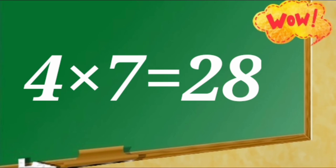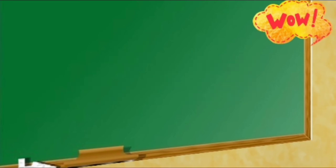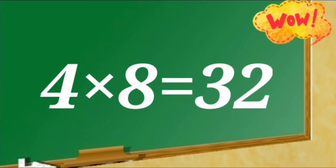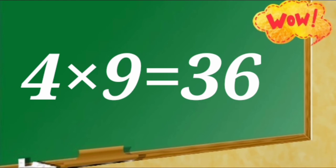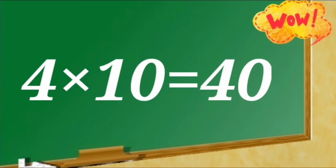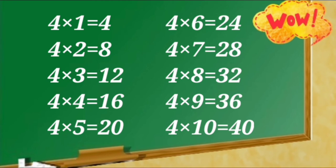4 sevens are 28. 4 eights are 32. 4 nines are 36. 4 tens are 40. 4 ones are 4, 4 twos are 8, 4 threes are 12, 4 fours are 16, 4 fives are 20, 4 sixes are 24, 4 sevens are 28, 4 eights are 32, 4 nines are 36, 4 tens are 40.